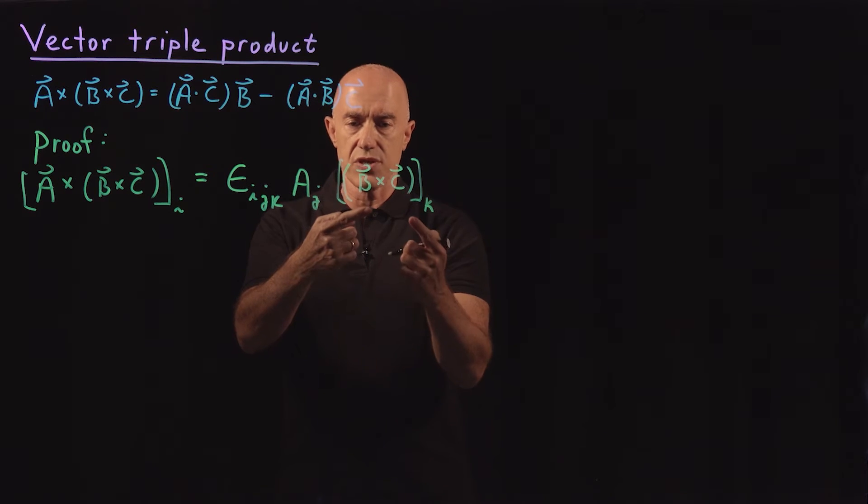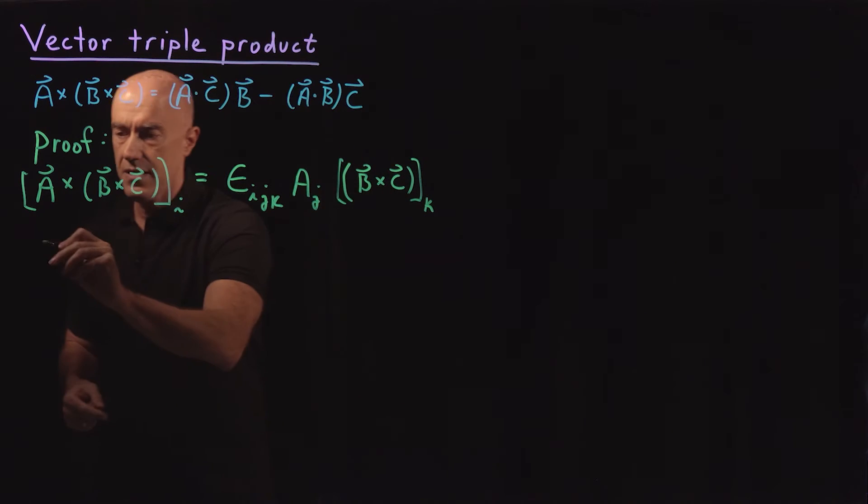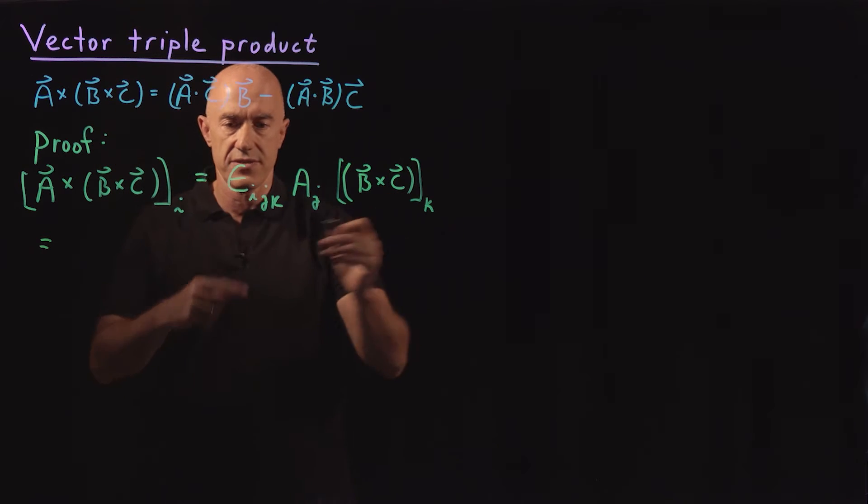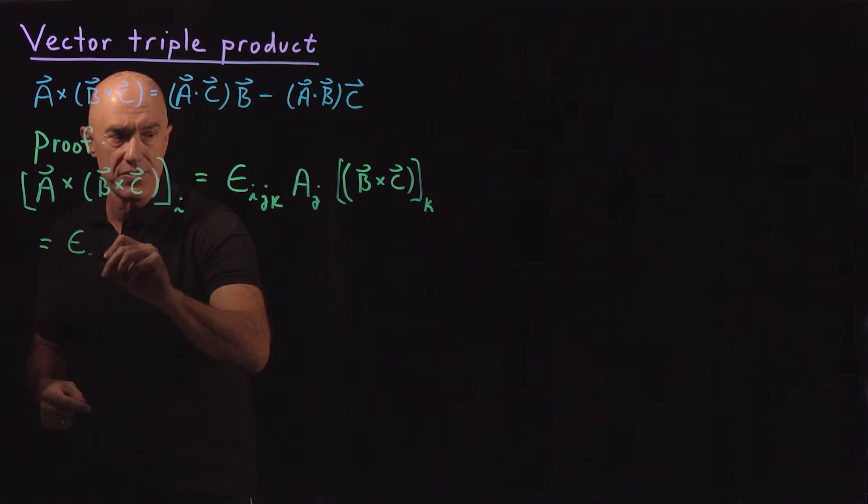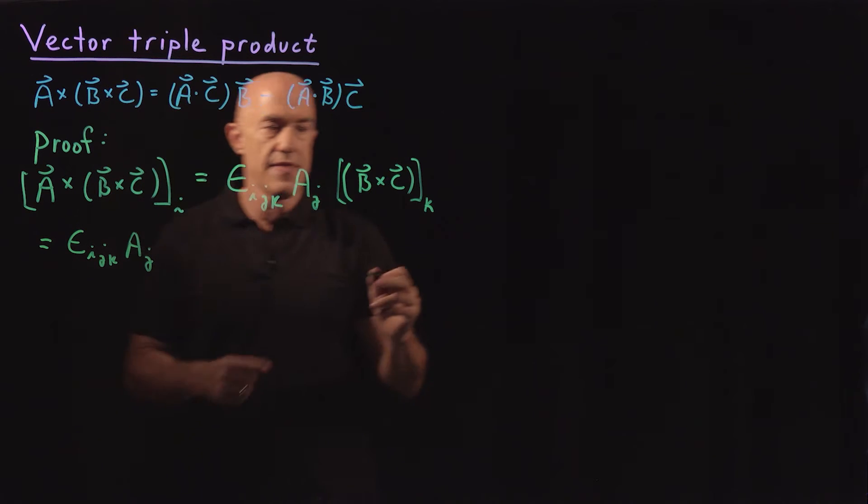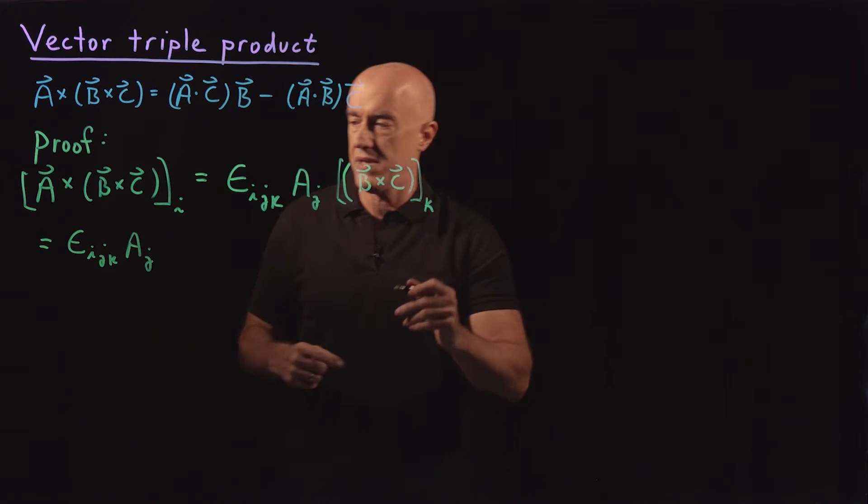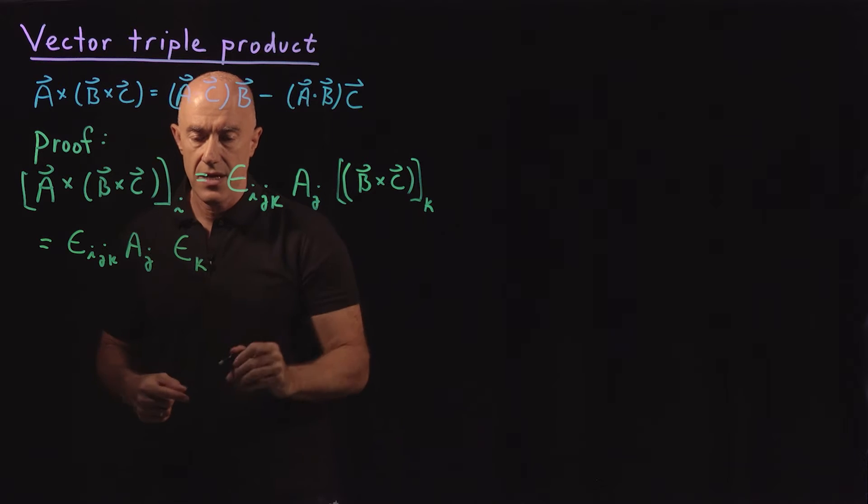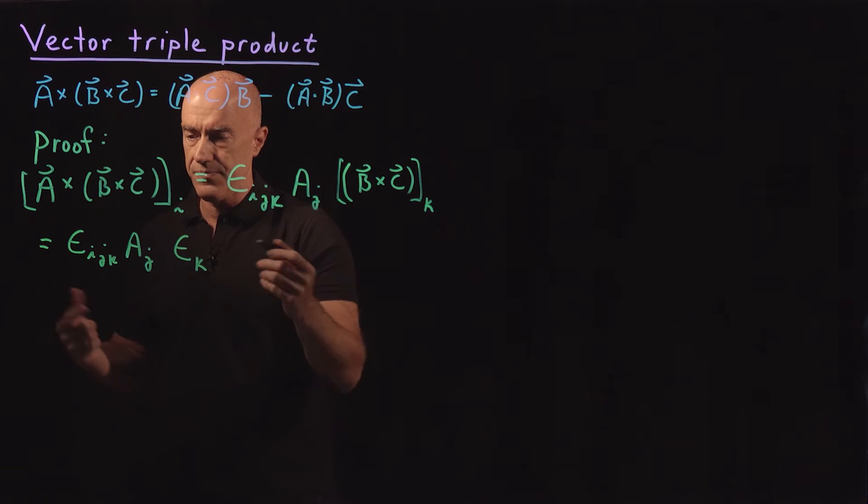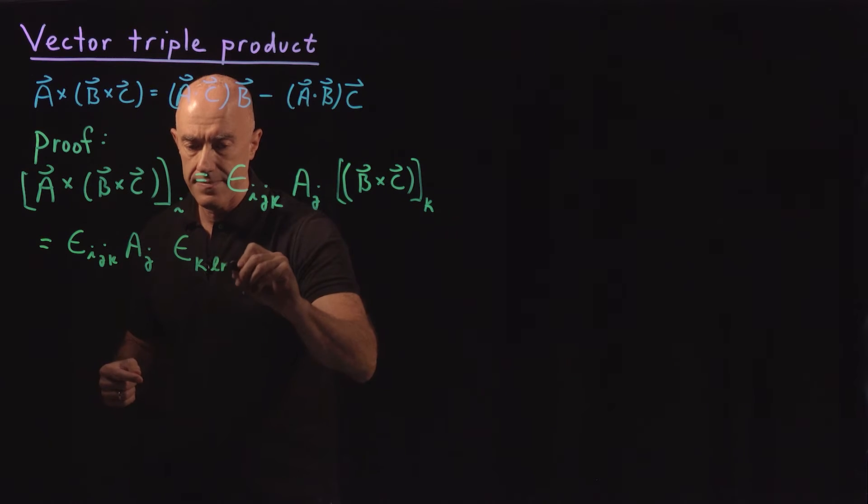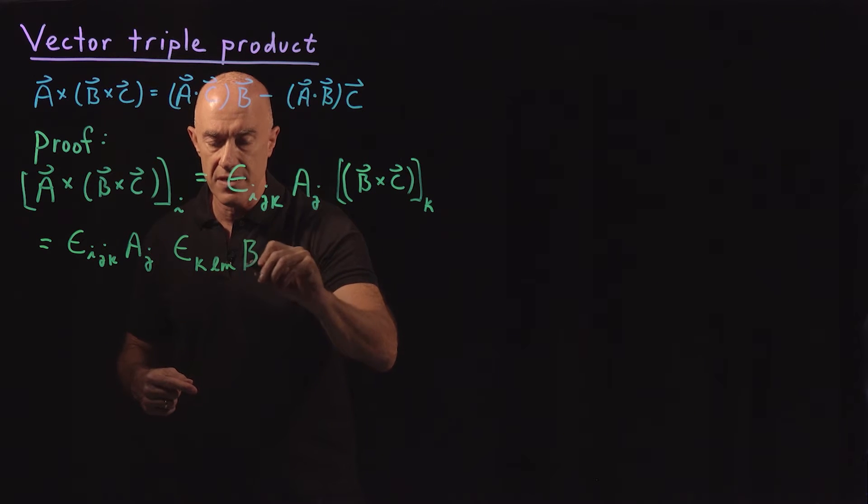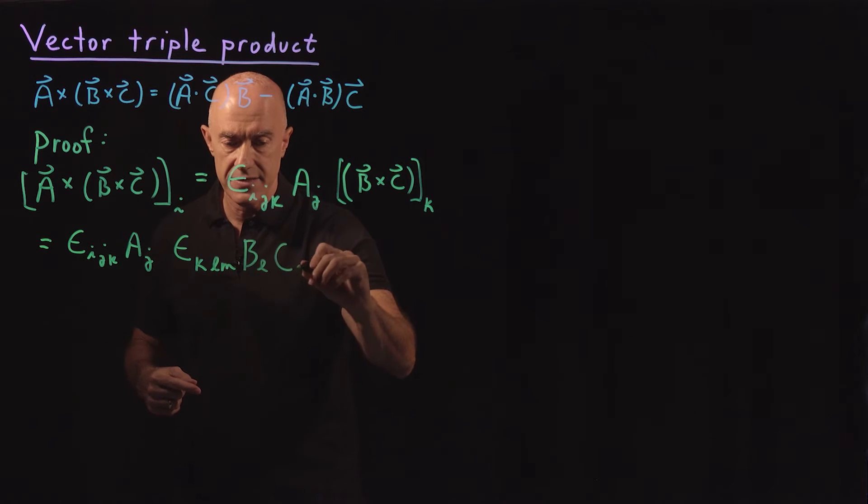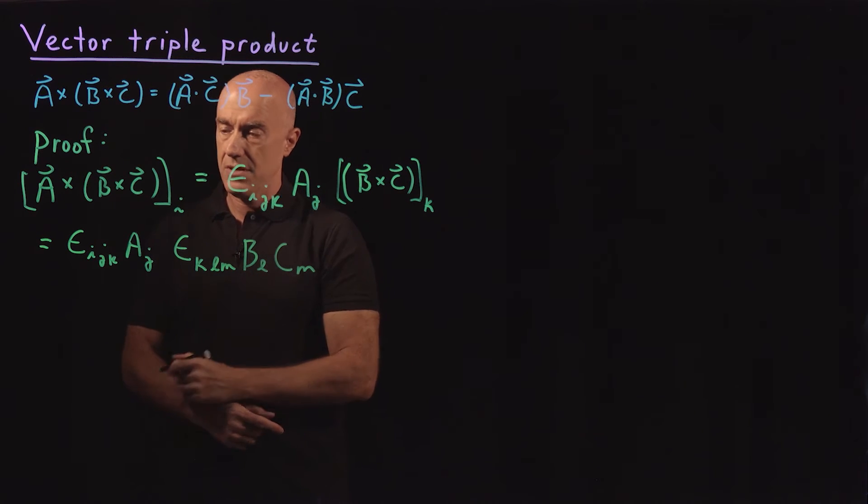And then this second cross product, we can write again using the Levi-Civita symbol. So we have epsilon_{i,j,k}, A_j. And then the k-th component of B cross C will be epsilon_{k,l,m}. And then I'll use l,m. And we'll have a B_l and a C_m.